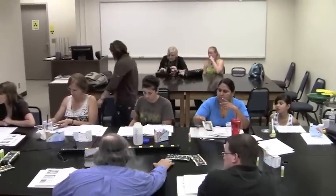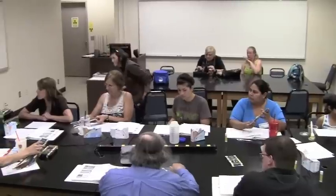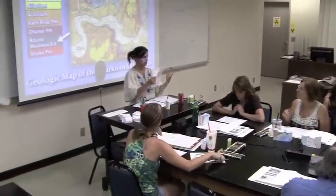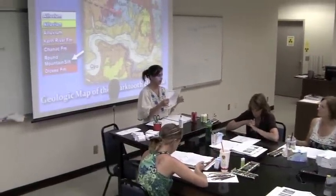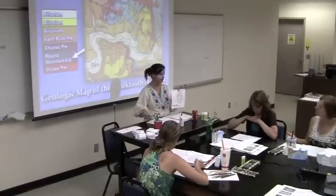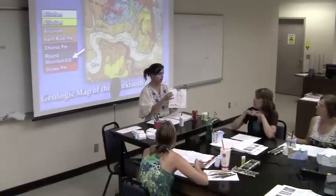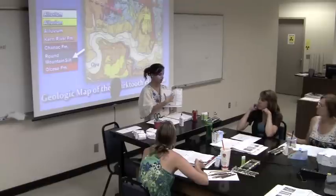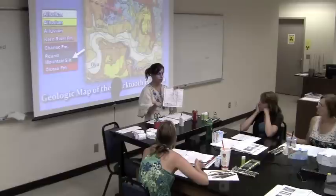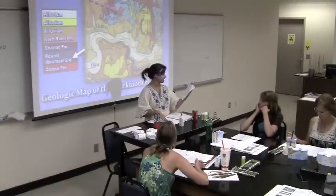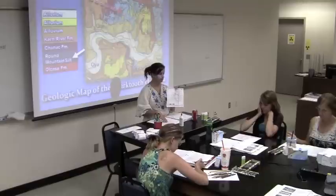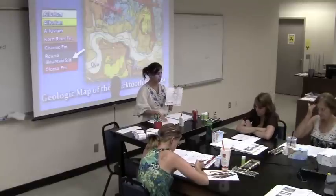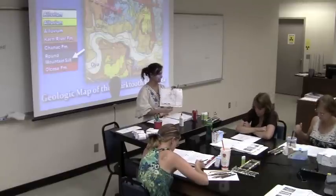So this is basically paint by number. You're looking for the symbol — the alluvium is QA, the symbol is right here, and you just find all the QAs and color them whatever. I recommend that when you do choose your colors, pick the largest rock unit on the map — the one that shows the most — and make that one white. It saves a lot of time in coloring. So in this case it's QTKR, the Kern River Formation. Just make that white and save yourself some time.